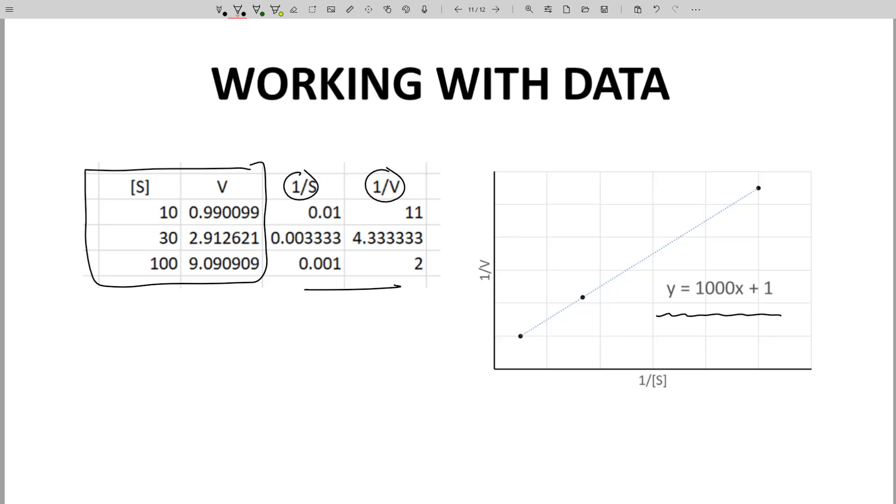From the y-intercept, which is 1 over Vmax, you can determine Vmax. Once you have Vmax in hand, the slope, in this case 1,000, can be used to determine Km.